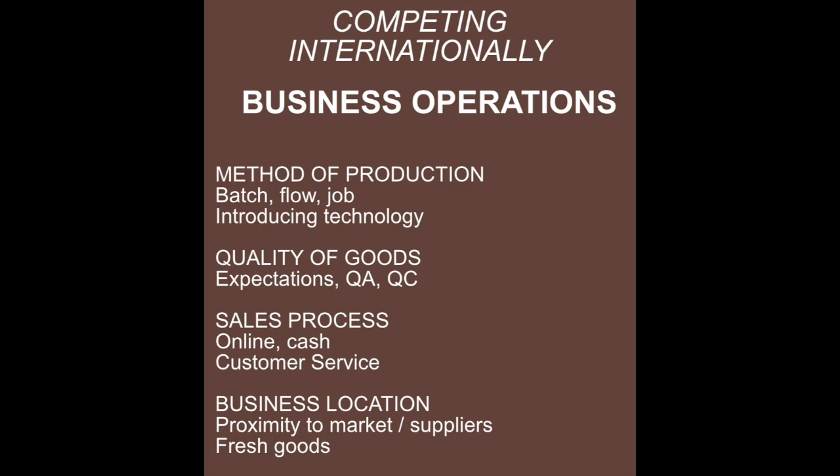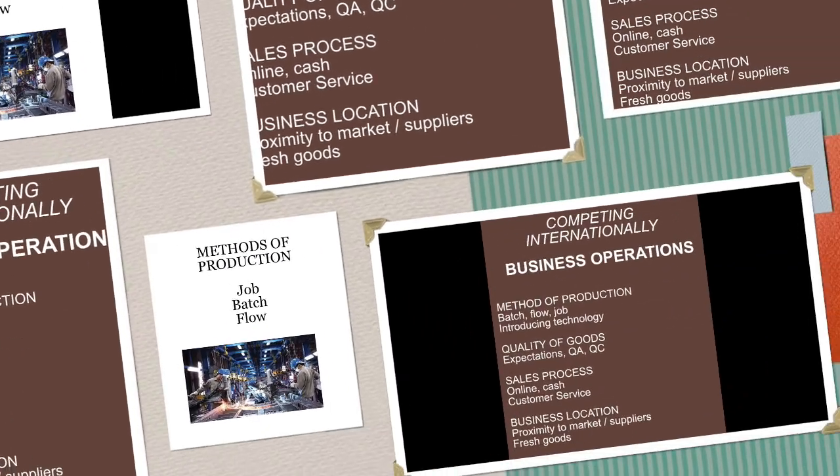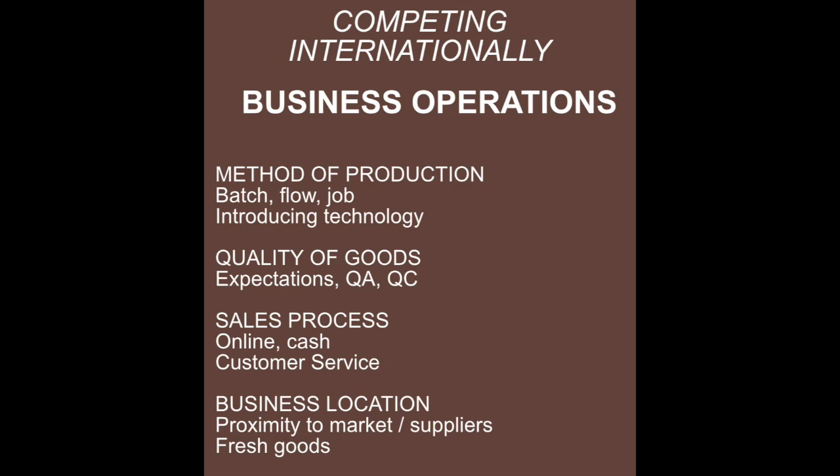A business may also need to change its operations to compete internationally. You need to choose the most efficient method of production, such as changing from batch to flow or flow to batch, depending on production costs and the level of technology available. The quality of goods is a huge consideration — buyers in different markets may have different expectations about quality. As a manager, you must ensure quality assurance and quality control are up to scratch if you open a factory in a different country. Then there's the sales process — customers in some areas may prefer to pay in cash or deal face to face. Do you sell online or open shops? All of this has to be determined by careful market research and knowledge of your local market.